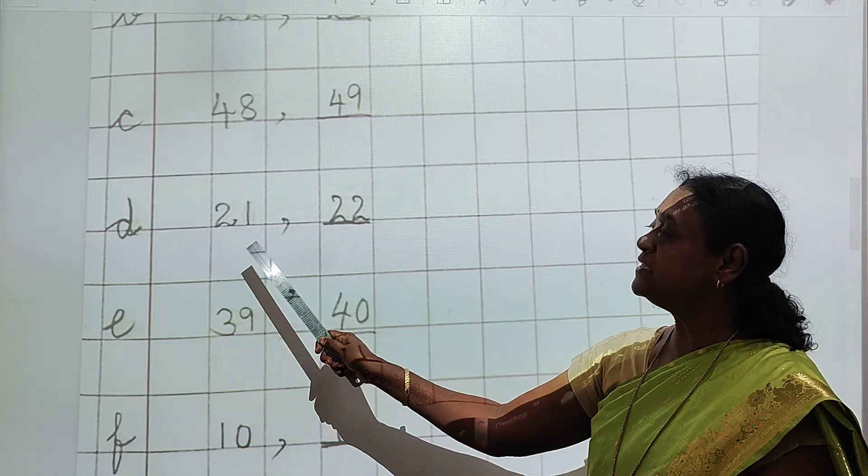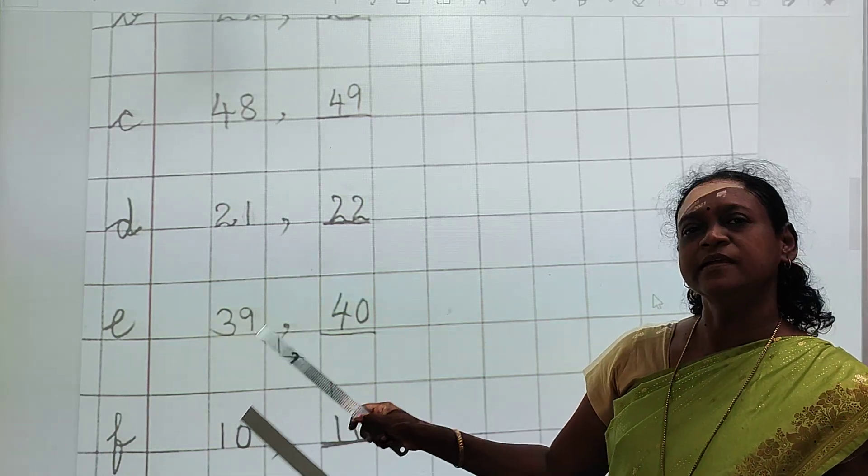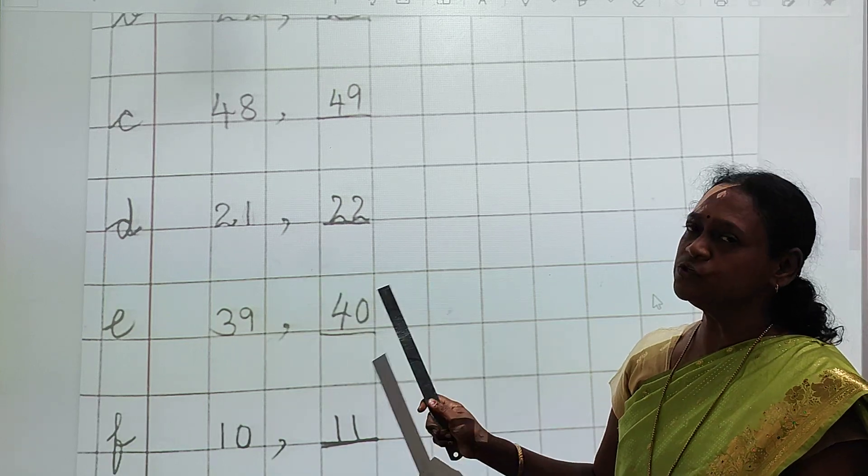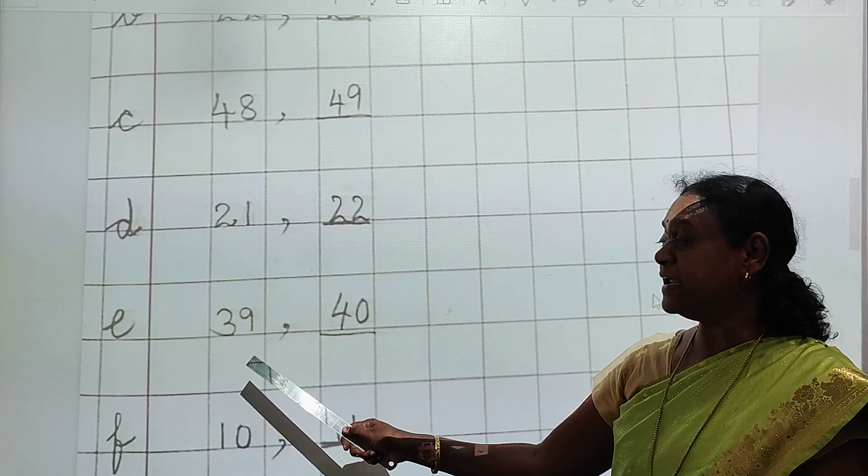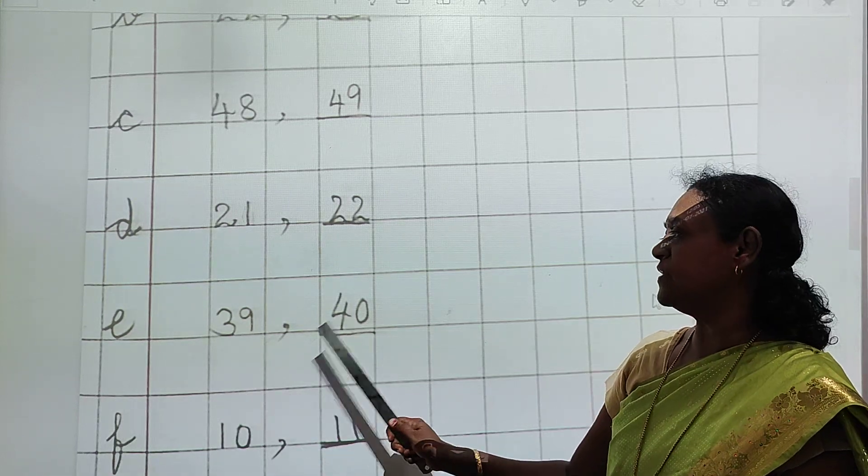This is 21. So 21 ke baad kya aata hai? Correct. 22. This is 39. Konsa figure hai? 39. 9 ke baad 10 hai, 0 ho jaata hai.